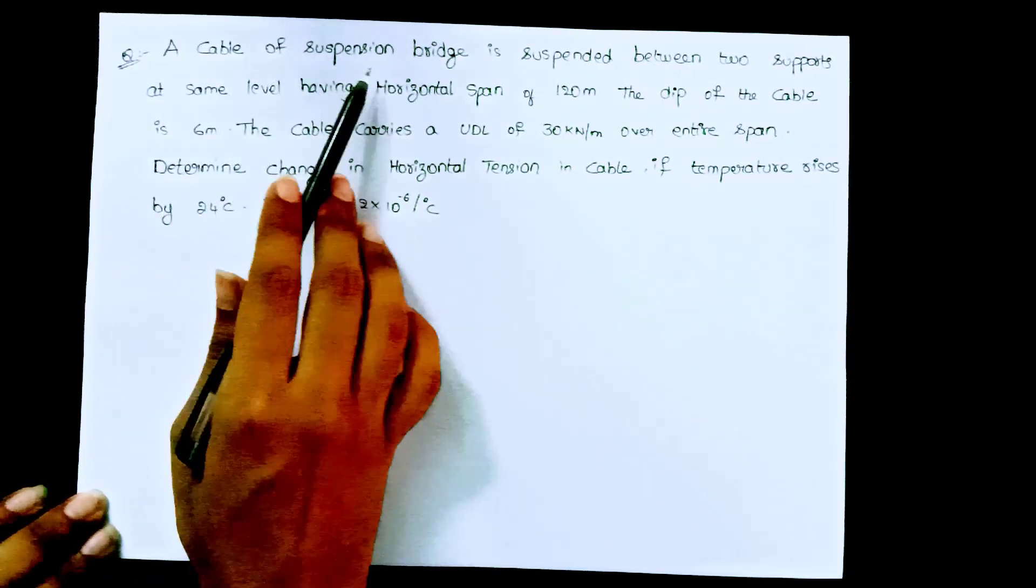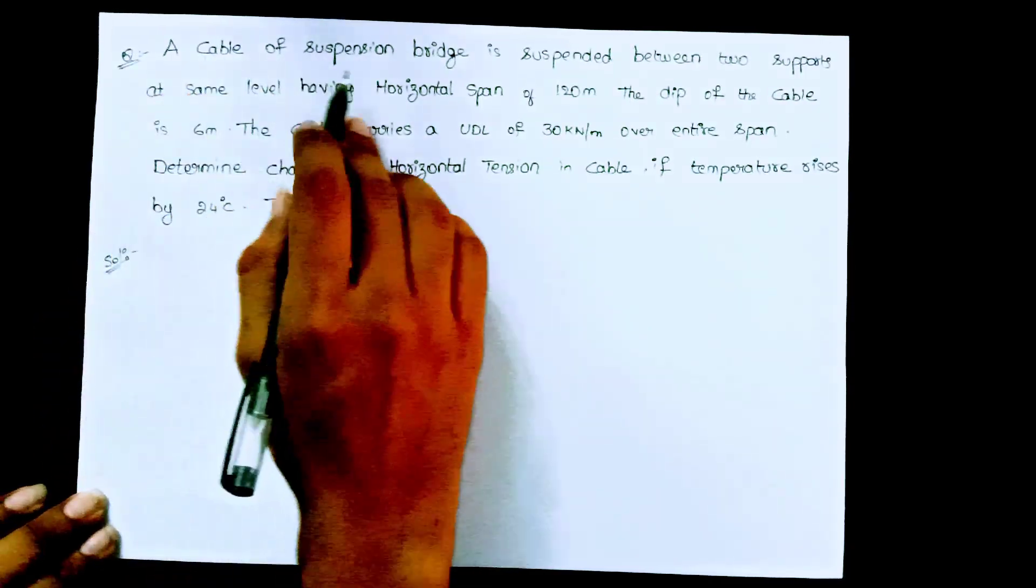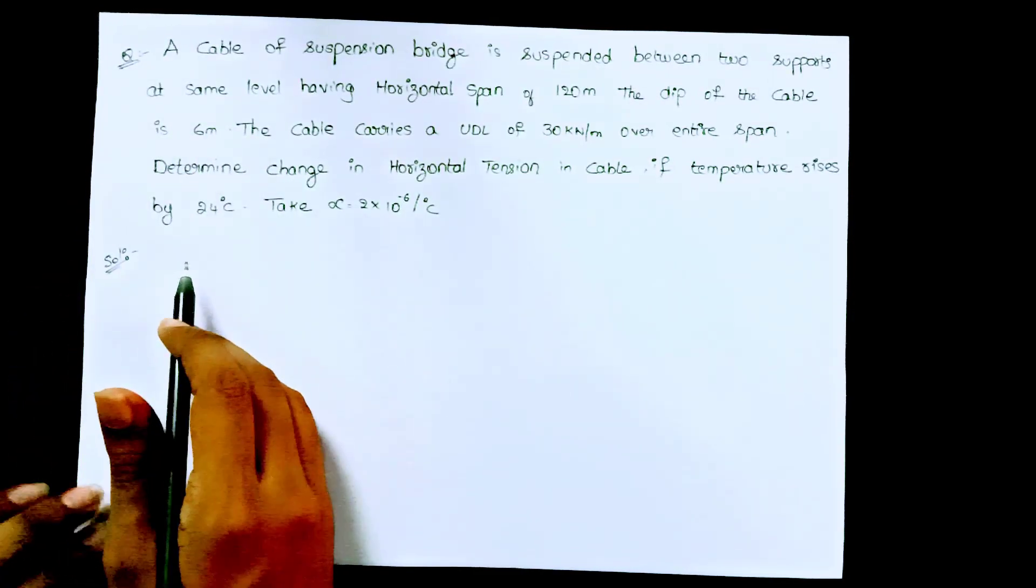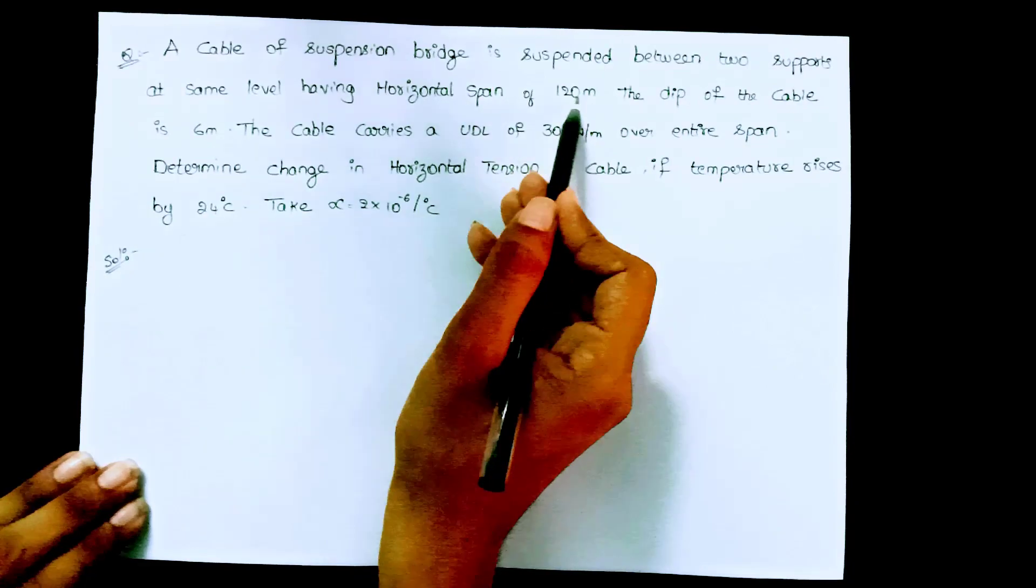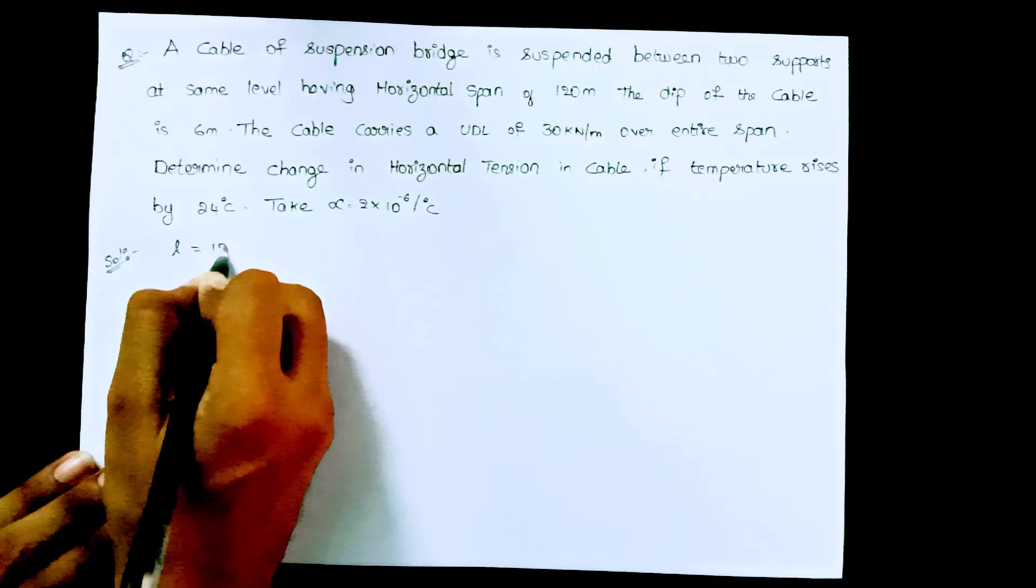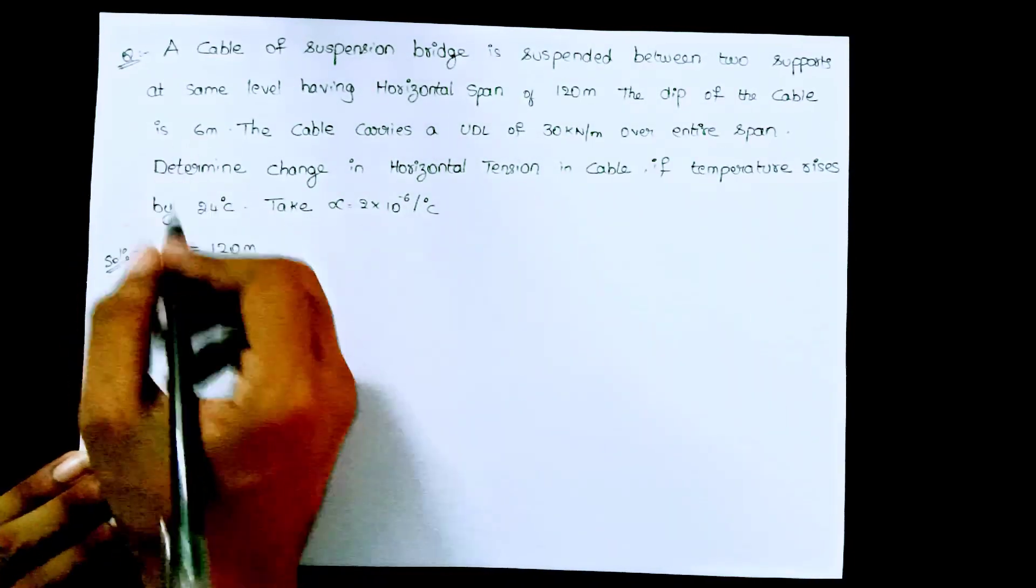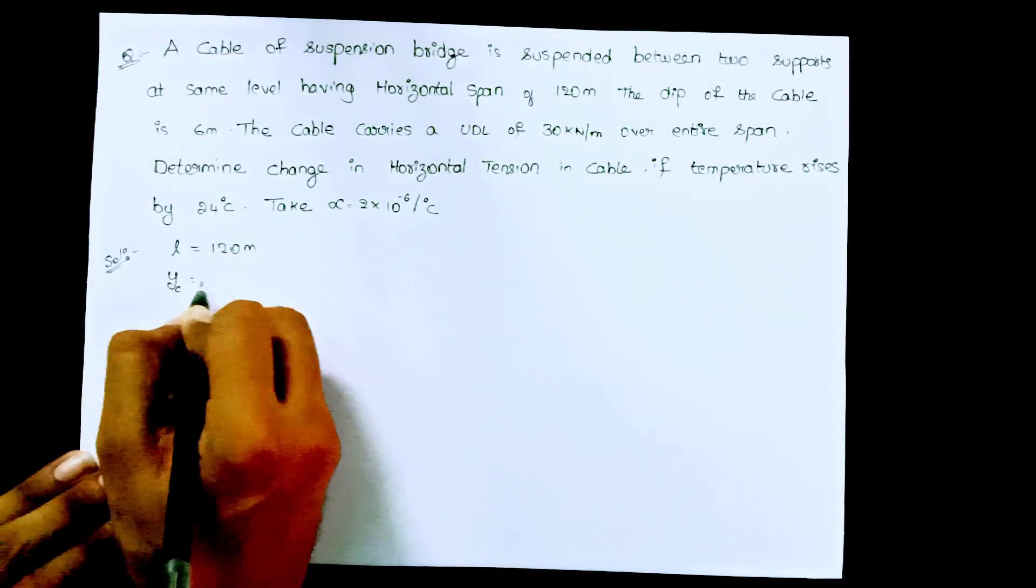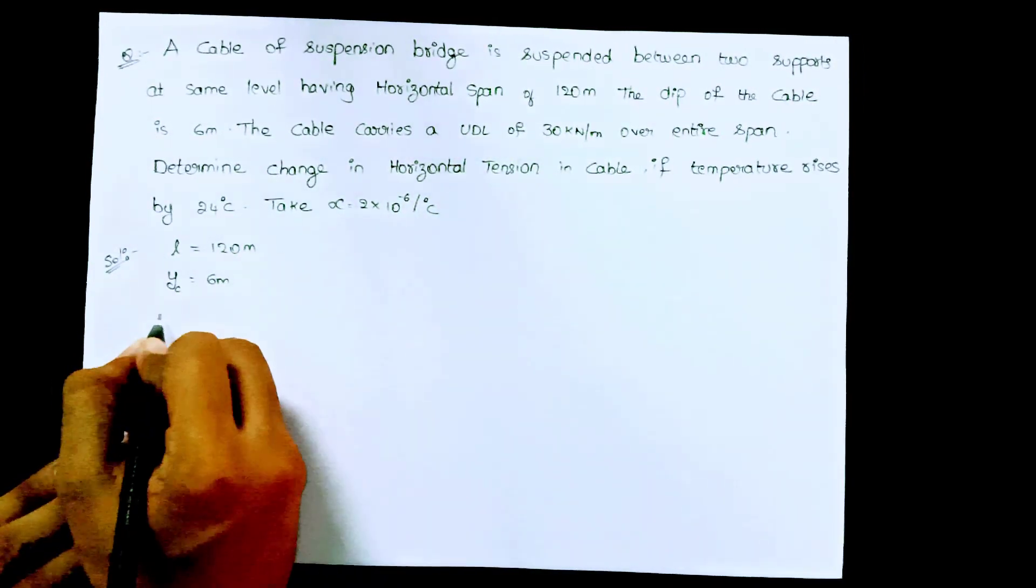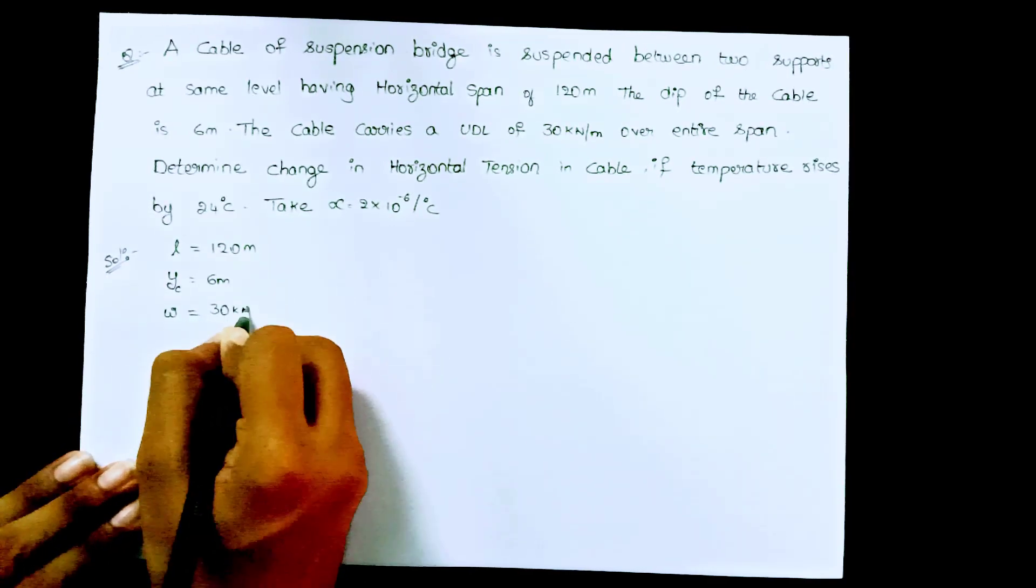It is given that a cable of suspension bridge is suspended between two supports at same level having horizontal span of 120 meters. The dip of the cable is 6 meters, that means yc equal to 6 meters. The cable carries a UDL of 30 kilonewton per meter, that means UDL intensity w equal to 30 kilonewton per meter over entire span.